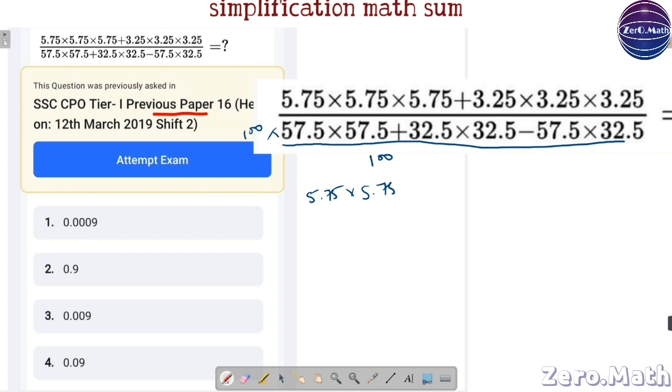After this, my denominator will be 5.75 times 5.75 plus 3.25 because we are dividing by 100, times 3.25 minus 5.75 times 3.25 and multiply it by 100.